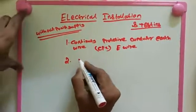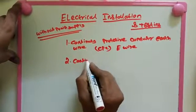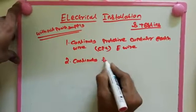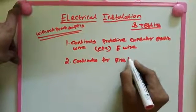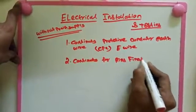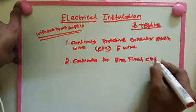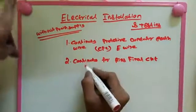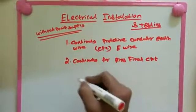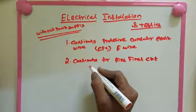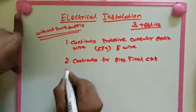Second step is continuity for ring final circuit. We need to check ring final circuit. Ring circuit means the loop circuit. Whatever the point we start, again the circuit will be closed to that point. That's called ring circuit.